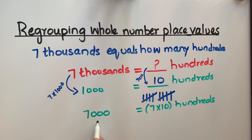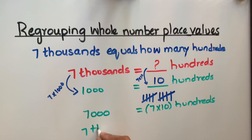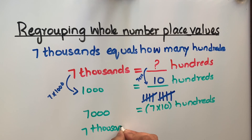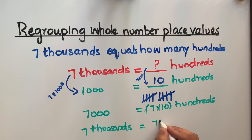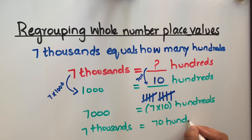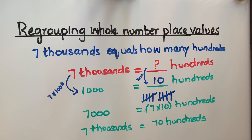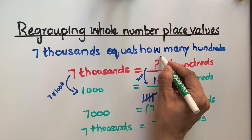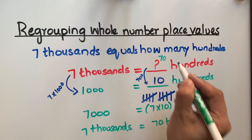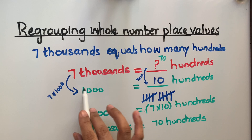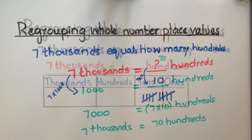So seven thousand equals seven times ten, which is seventy. Seventy hundreds. Seven thousand equals seventy hundreds. That is the answer to the question: seventy.